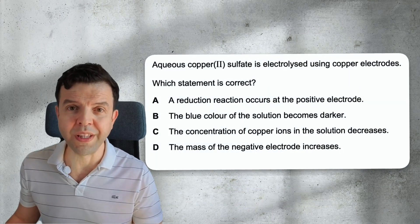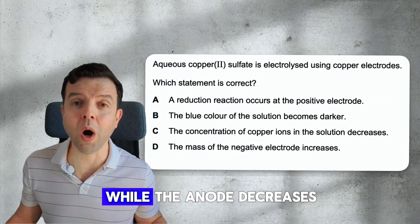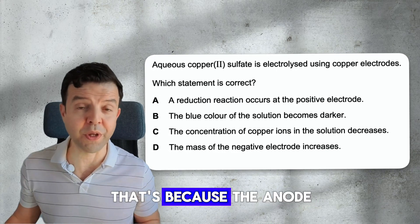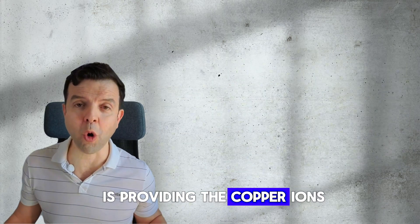When using copper electrodes, the size of the cathode increases while the anode decreases in size. The color of the electrolyte remains blue. That's because the anode is providing the copper ions.